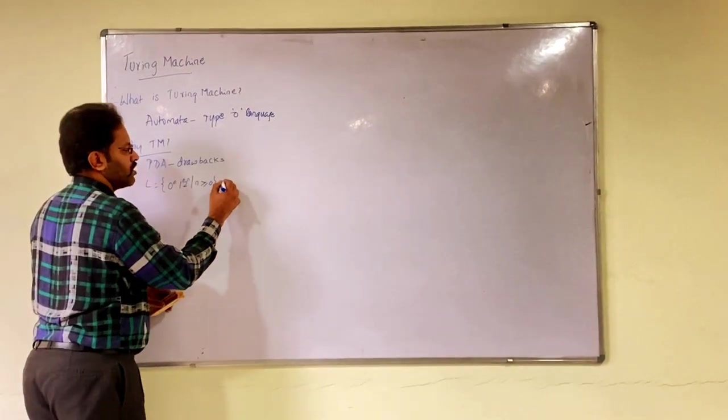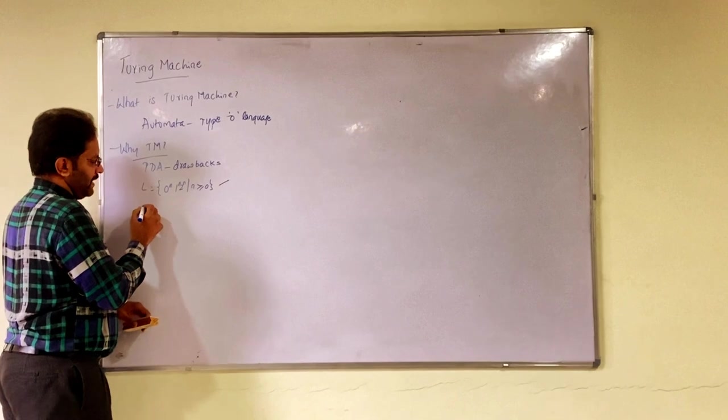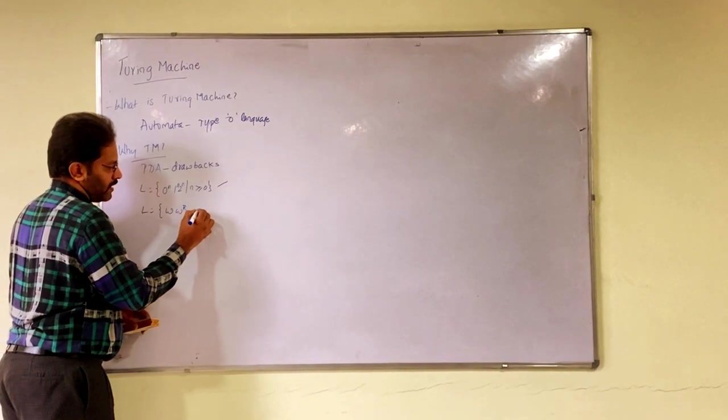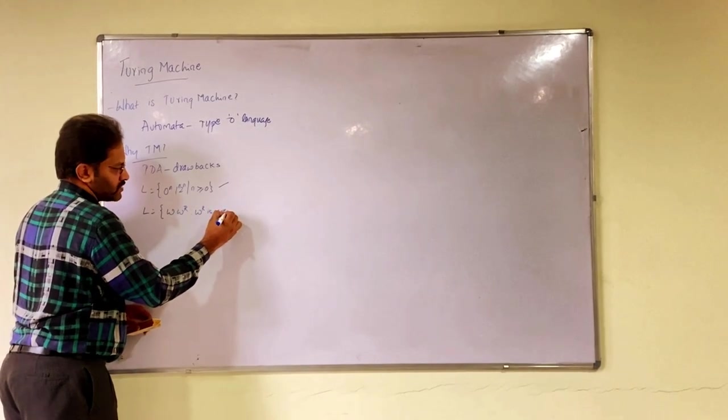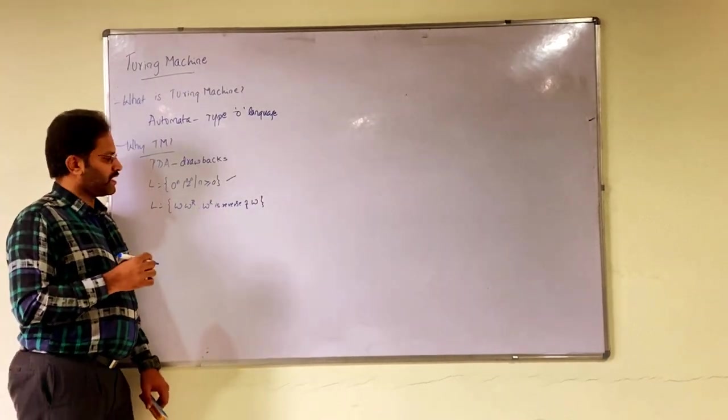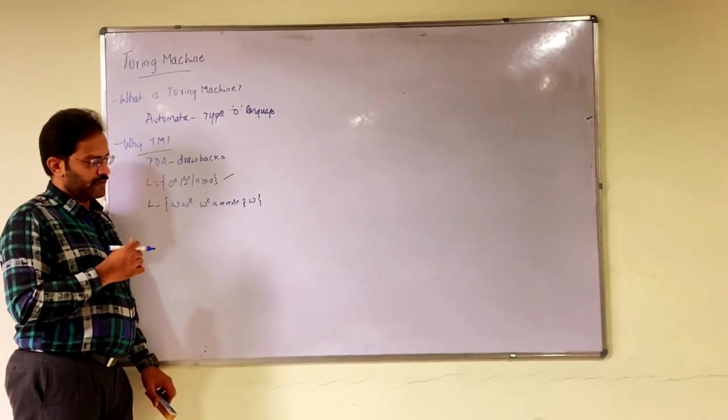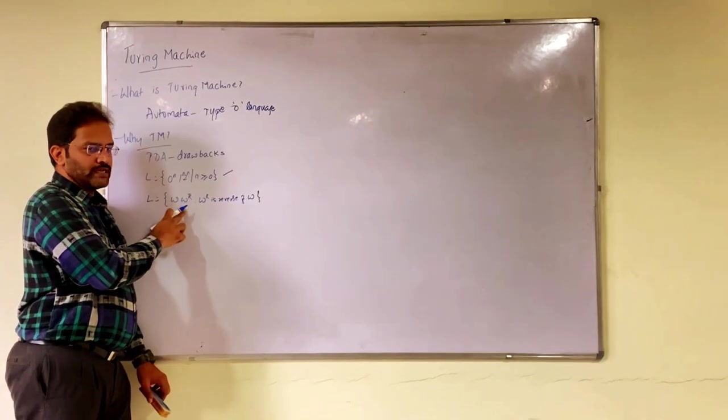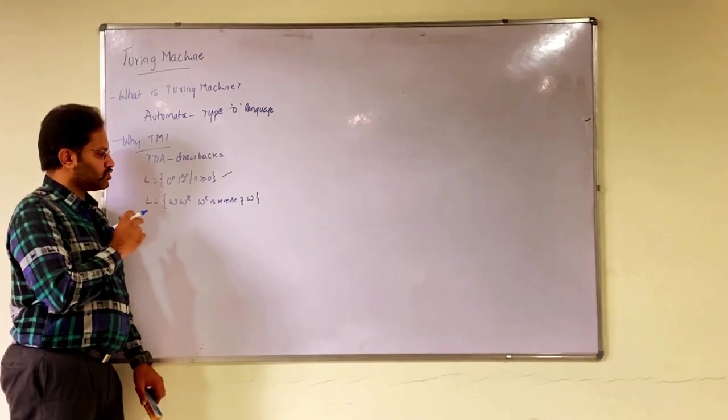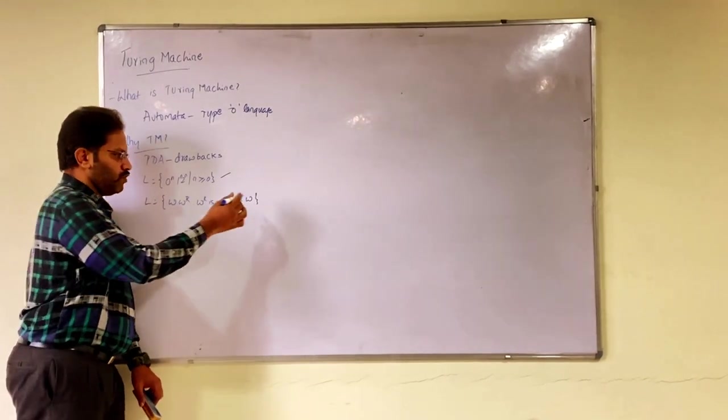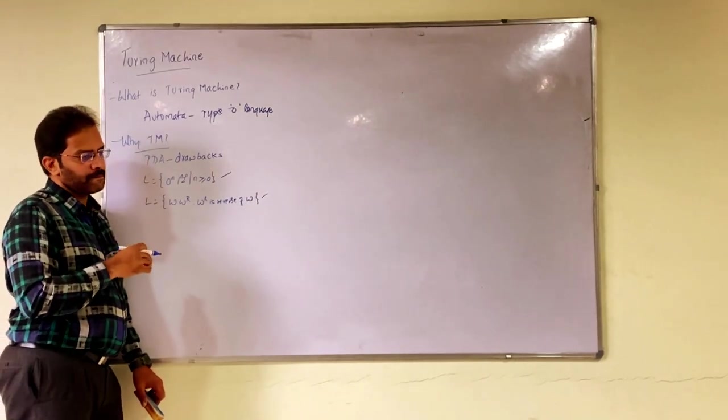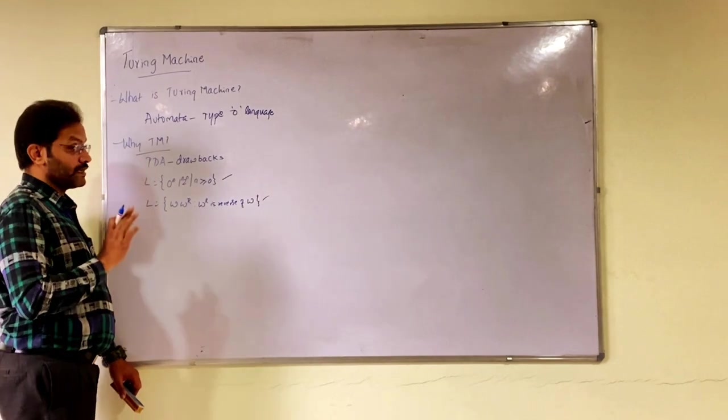This is one problem which cannot be solved in PDA. Also, if you have the problem w w power r where w r is reverse of w, this is also one problem we cannot solve with PDA properly. Because you have a confusion here, hope you can recall this PDA is called as n PDA. We are unable to solve this problem. Both these type of problems can be solved using Turing machine. Both won't come at Type 1 language, sorry Type 2 language.